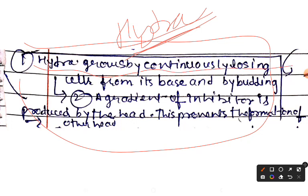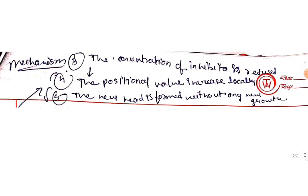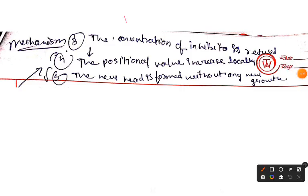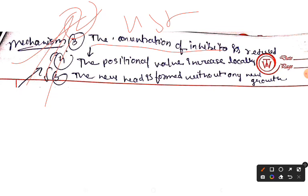In hydra, it grows by continuous loss of cells from its base and by budding. A gradient of inhibitor is produced by the head, which prevents the formation of other heads. The concentration of inhibitor is reduced at certain points, the positional value increases locally, and a new head is formed without any new growth.